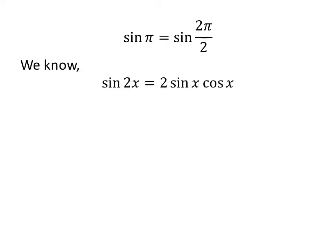As we know, the trigonometry identity sine of 2x is equal to 2 times sine of x times cosine of x.